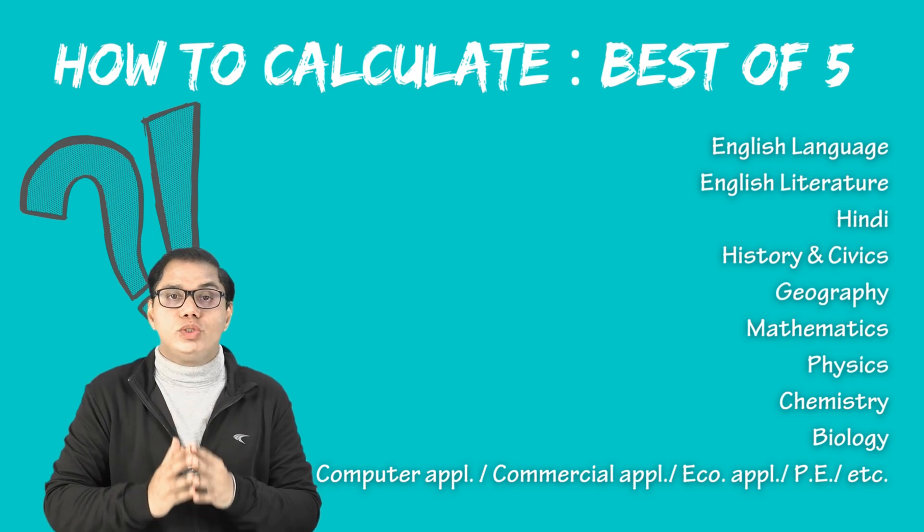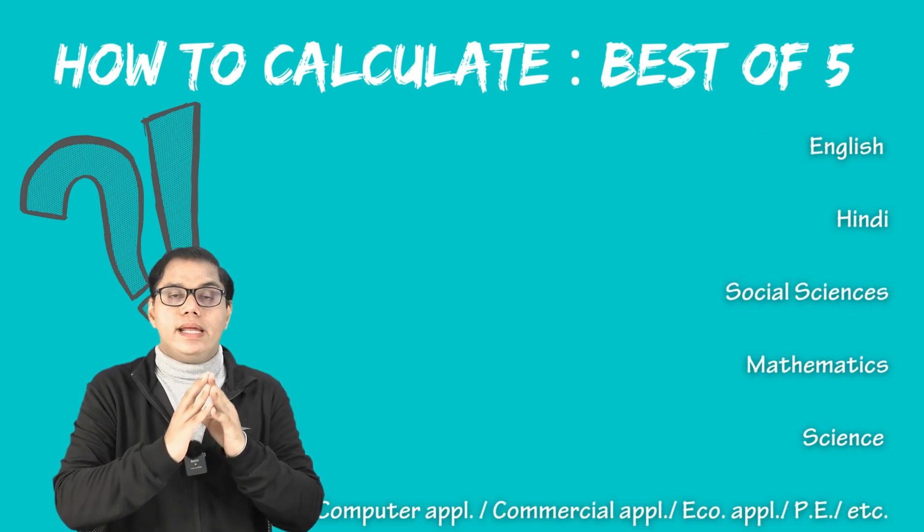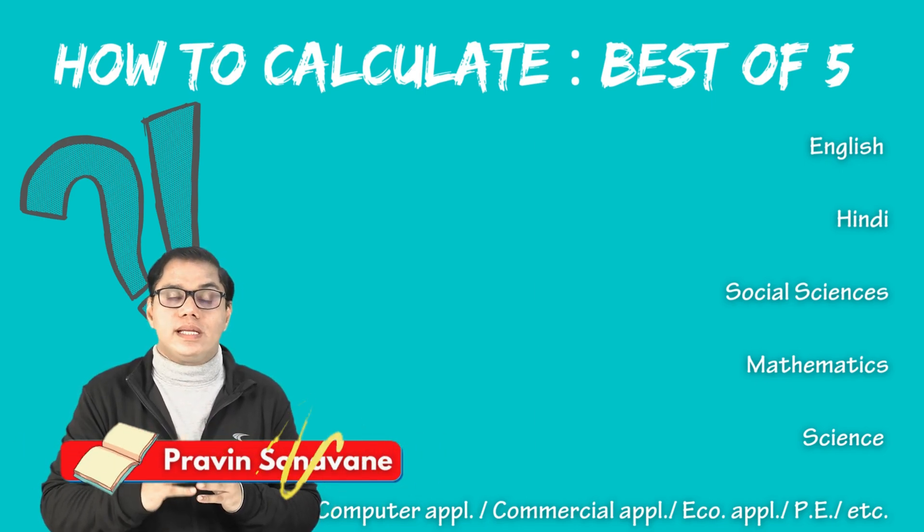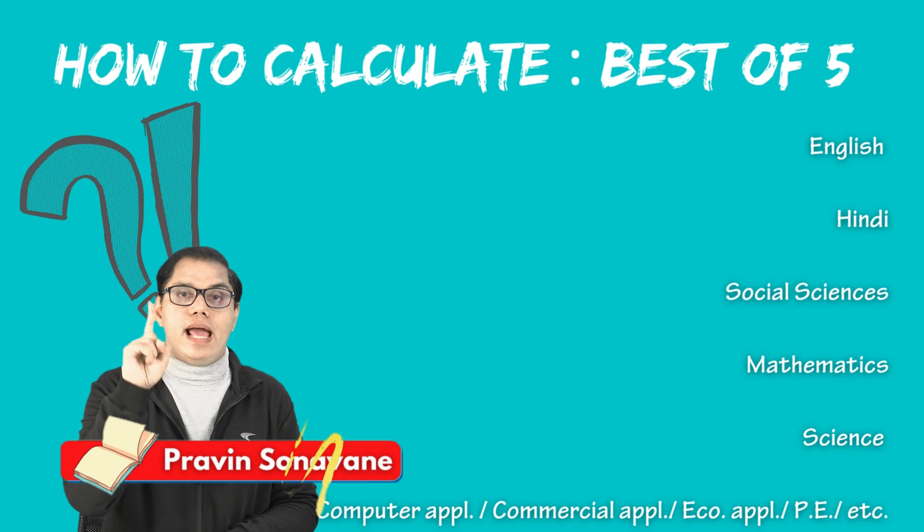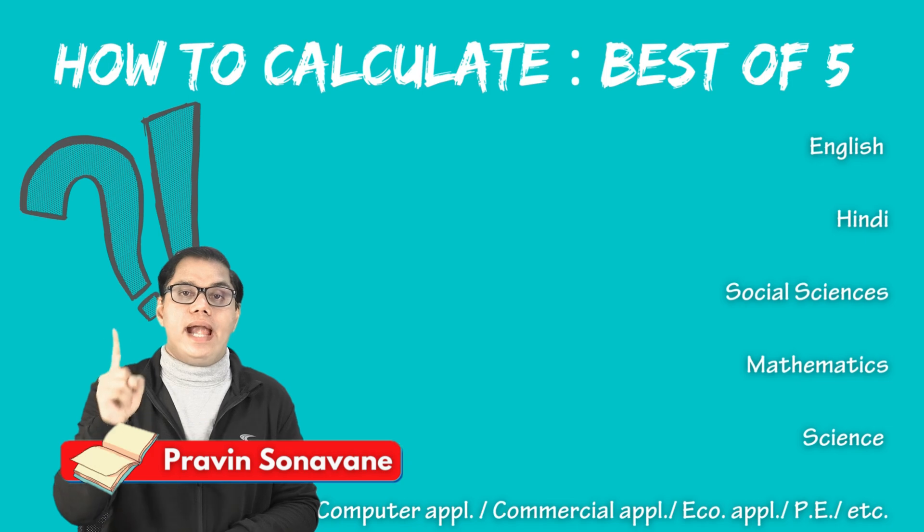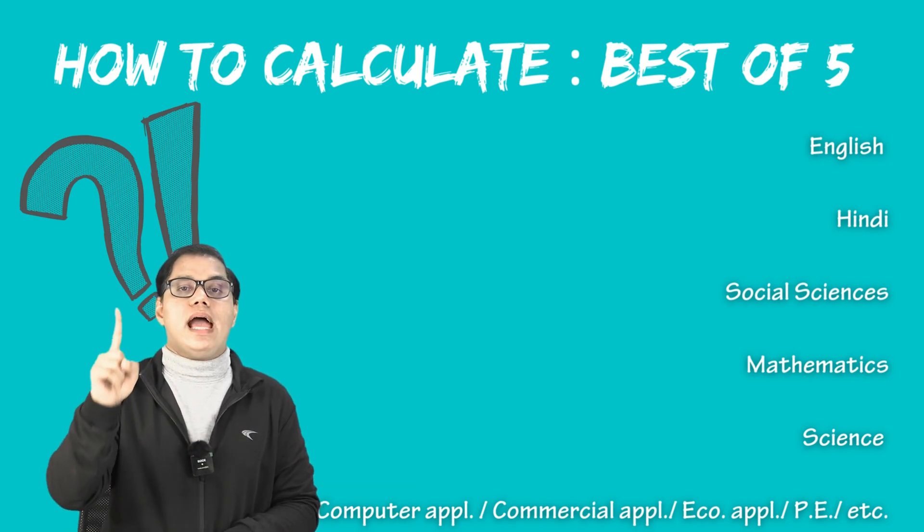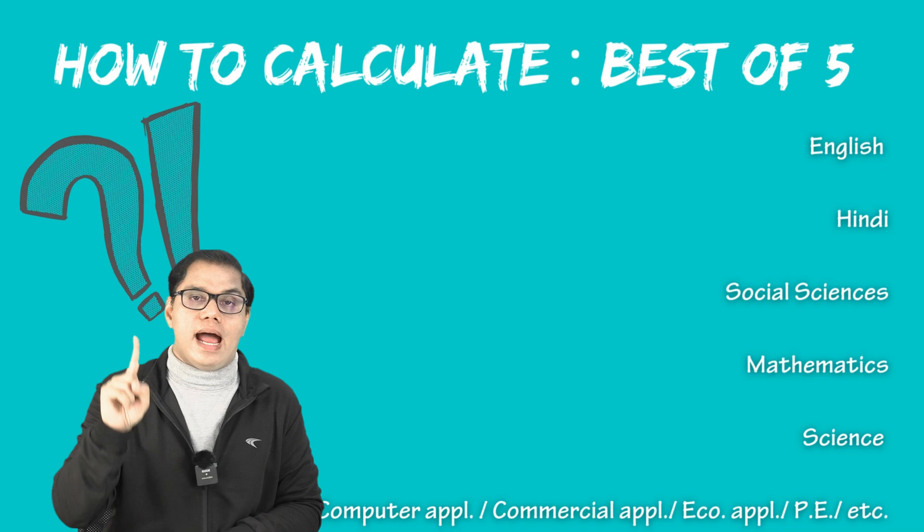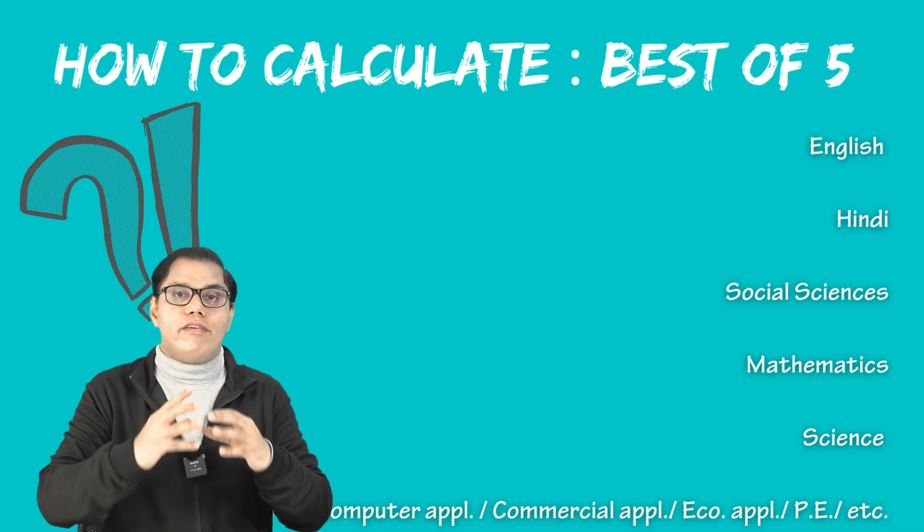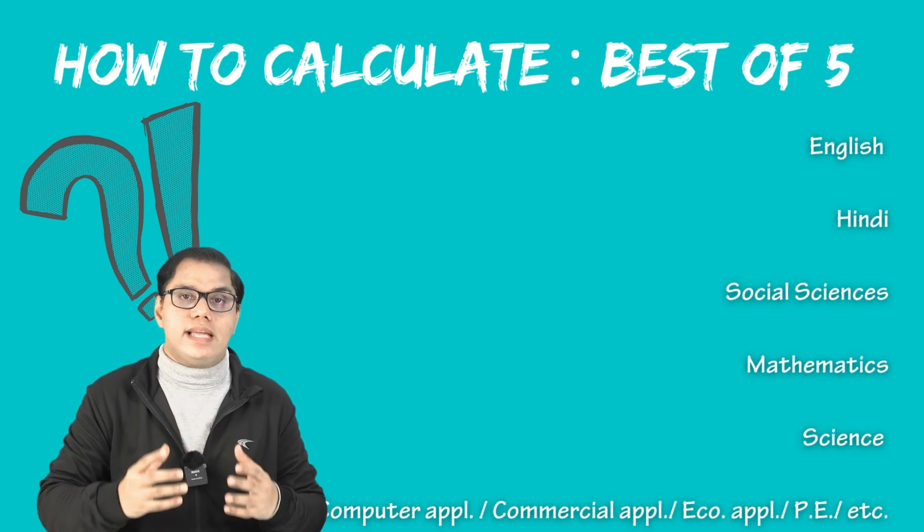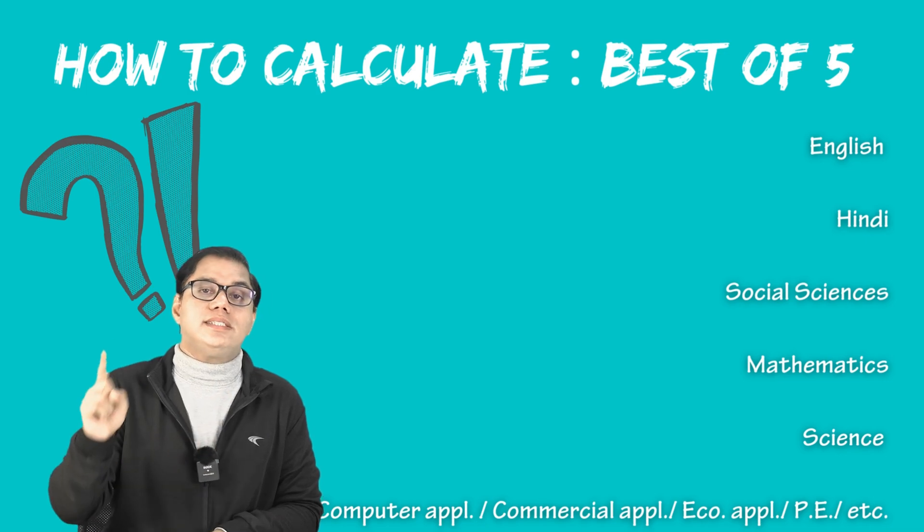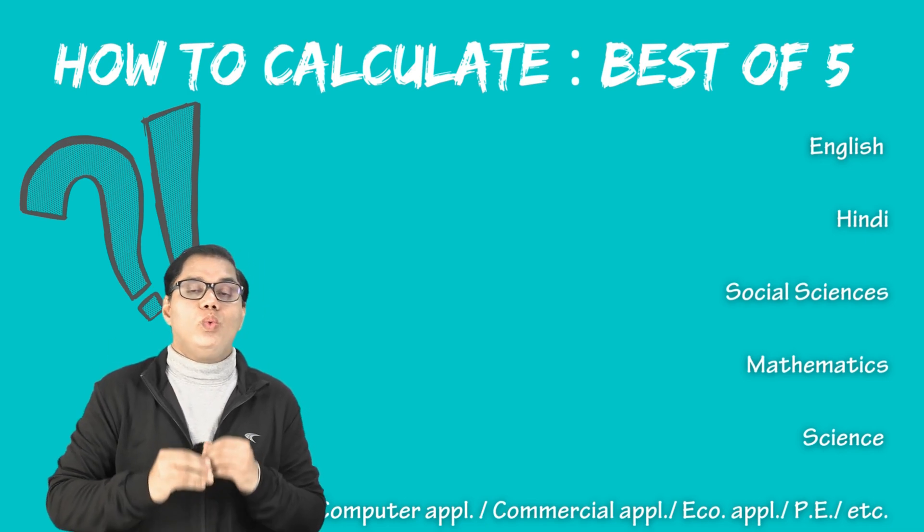Now let us talk about first two papers. One is English literature and another one is English language that will be calculated as one subject. These two papers English literature and English language will be calculated as one single subject that is English. Later on we will see how the average of this English language and literature is calculated.